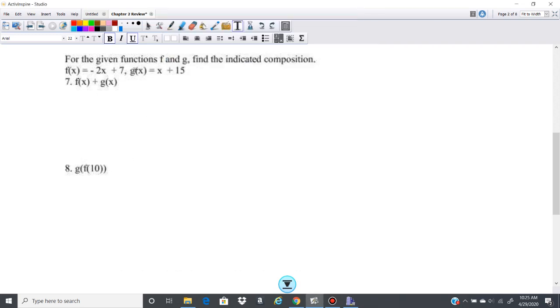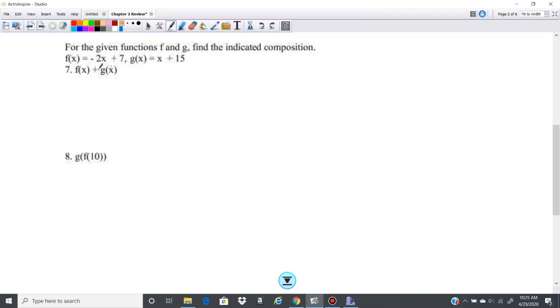In number 7 we are doing composition functions, so 7 and 8 here. You've got an f(x) function of -2x + 7 and a g(x) function of x + 15.